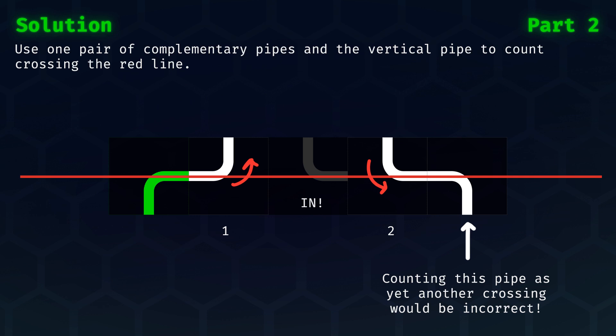Note the positions for the numbers one and two were not chosen arbitrarily. We could have also moved them to the outside by one position each, but it is important to only use one pair of complementary pipes to count the crossings. Counting the pipe all the way on the right as yet another crossing would be incorrect.